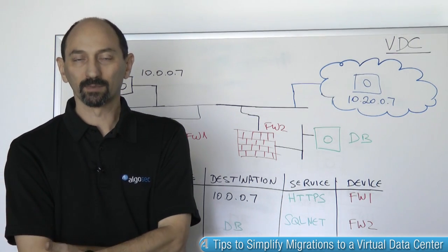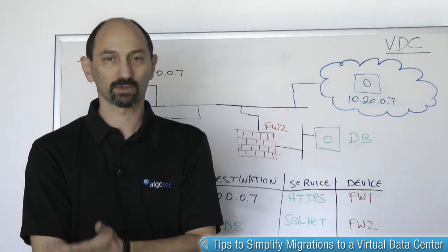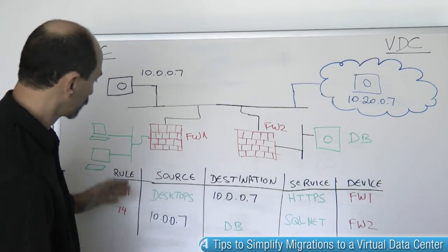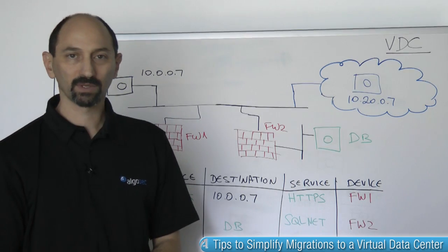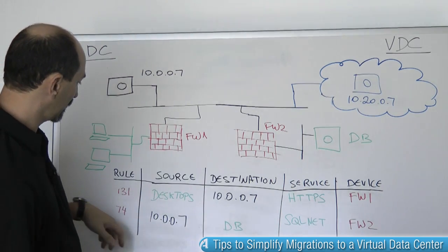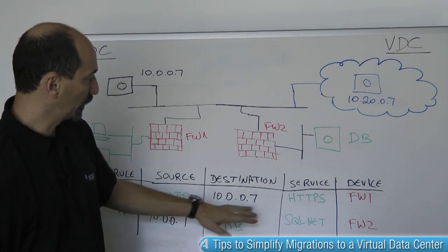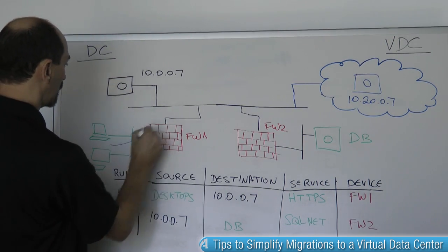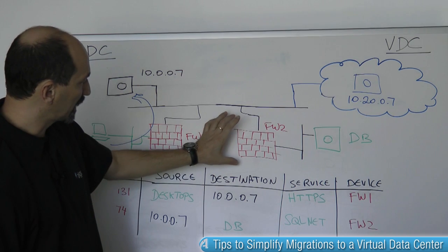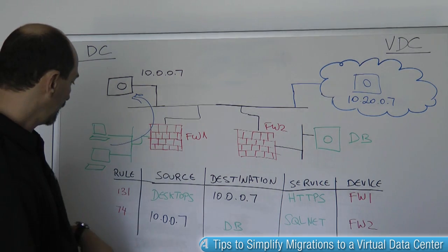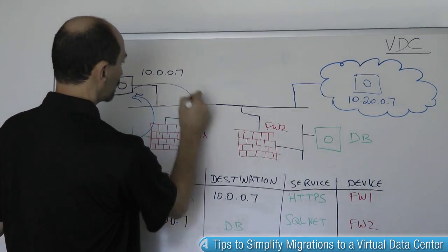Once we've made that observation, we have a blueprint for a solution. We can search the firewall policies across the whole estate and discover all the rules where the server we are migrating is being referenced. For instance, there is a rule allowing traffic from these green desktops on the left to reach the server through firewall number one, and there is also traffic allowed by firewall number two going from that old server to a database.